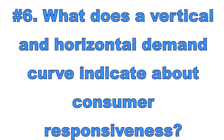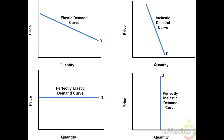Number six: what does a vertical and horizontal demand curve indicate about consumer responsiveness? There are two extreme cases of price elasticity of demand — perfectly inelastic and perfectly elastic demand. A perfectly inelastic demand curve is a vertical line, meaning there will be no change in quantity demanded when prices change; consumers are completely unresponsive. This can occur if a good is an absolute necessity with zero substitutes. A horizontal line represents a perfectly elastic demand curve — the slightest increase in price will lead to zero quantity demanded. This can occur when there are many perfect substitutes; for example, a perfectly competitive firm has a perfectly elastic demand curve.